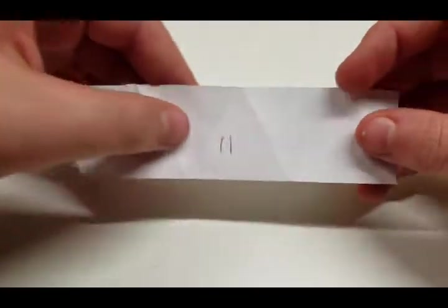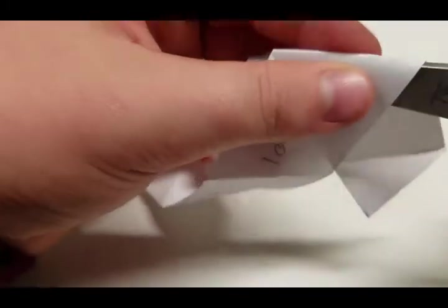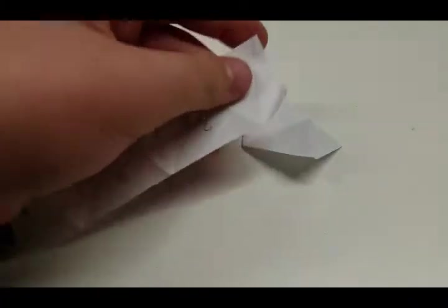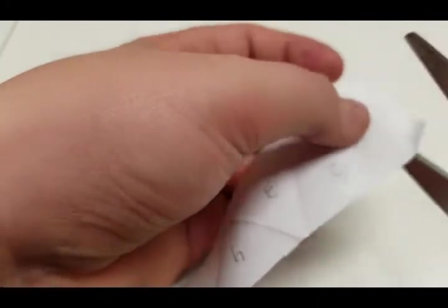And then so after your 11th triangle, take your scissors and cut it off so you only have 11 triangles. And then this part here, take your scissors and cut it off.